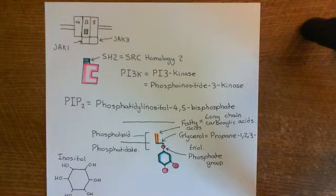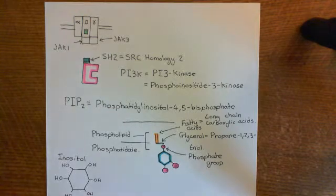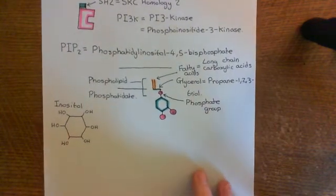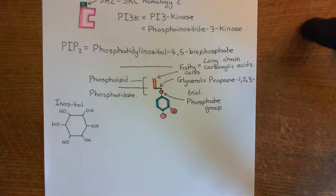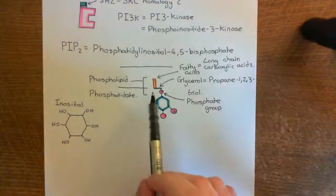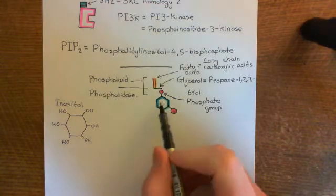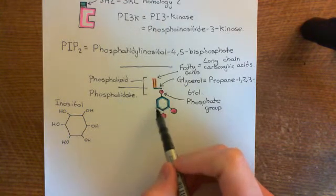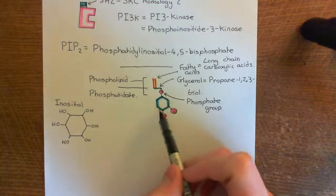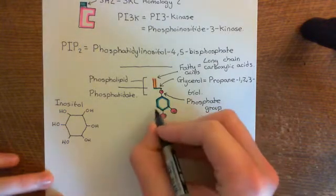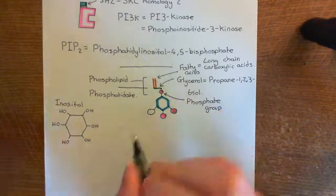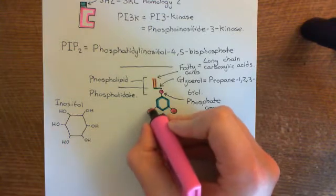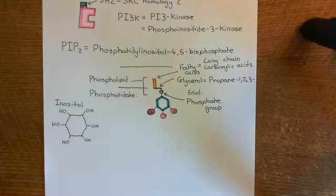This recruits PI3 kinase to the membrane. This doesn't activate the enzyme — it was already activated — but it brings the enzyme to its target: phosphatidylinositol 4,5-bisphosphate molecules in the cell membrane of the naive CD4-positive or CD8-positive T cell. PI3 kinase will add a phosphate group onto the third carbon of the inositol ring of this phosphatidylinositol 4,5-bisphosphate molecule.